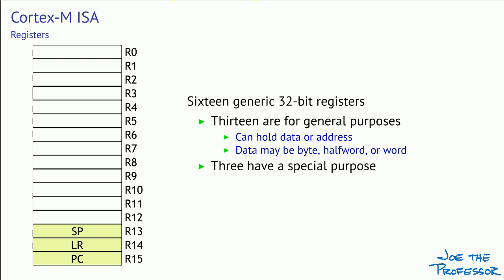Three of the registers have a very special purpose. Register 13 is the stack pointer. The stack is a very important data structure dynamically allocated in RAM. The stack pointer keeps track of the memory address that holds the last value stored on the stack. Many processors don't treat the stack pointer as a generic register, but doing so makes it very easy to access data on the stack. Register 14 is the link register. Whenever you call a subroutine in the Cortex-M architecture, the link register is automatically loaded with the return address, so at the end of the subroutine, we use that value to get back to the calling program.